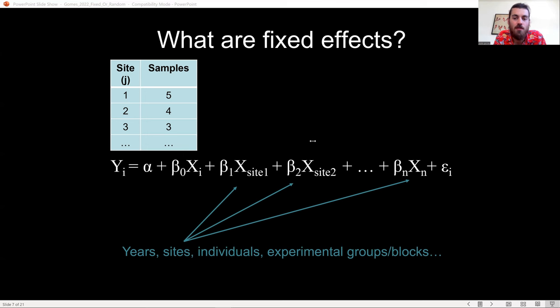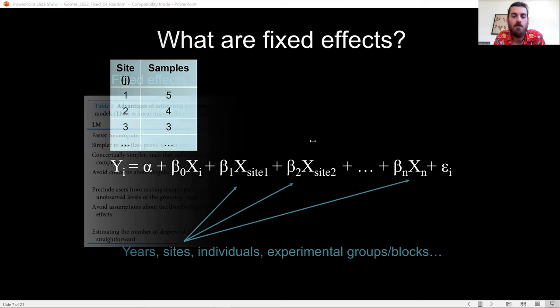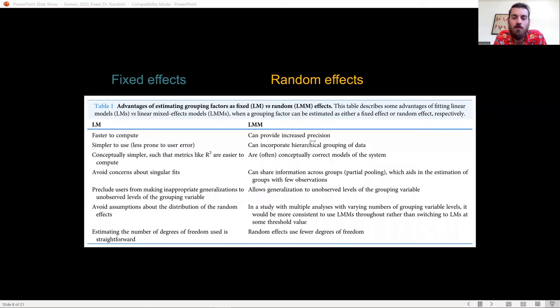But there are many other advantages of fitting these grouping variables as random effects. One important use of random effects is that one can estimate population-level mean and variance metrics that allow one to generalize to an unobserved level, such as an unmeasured site or an unmeasured year.